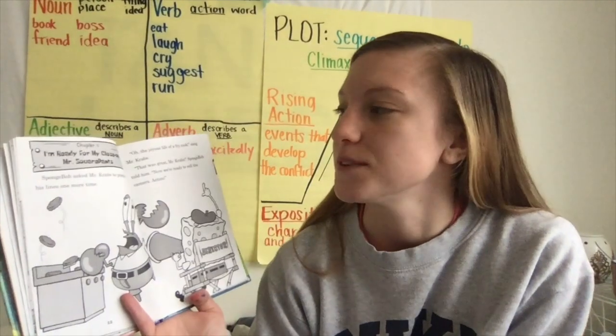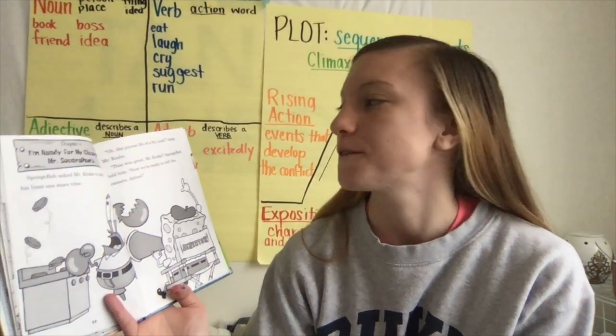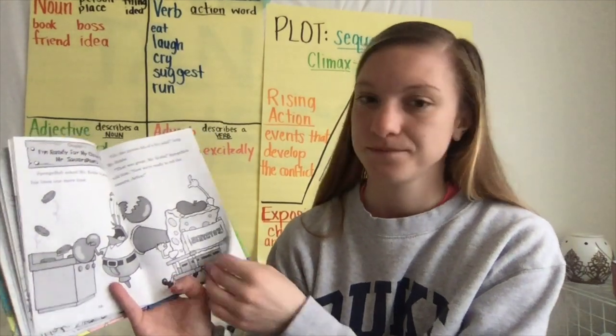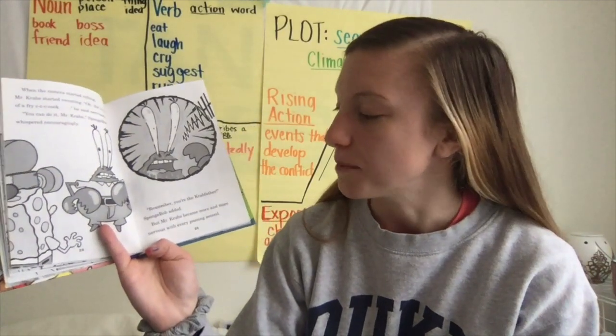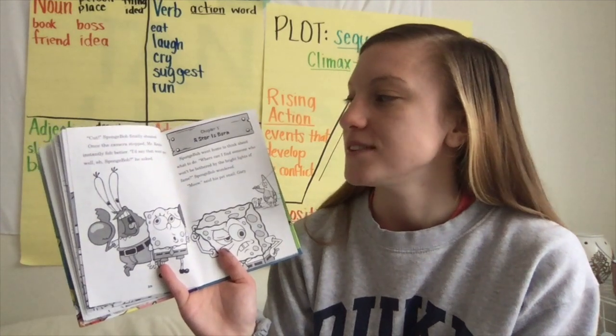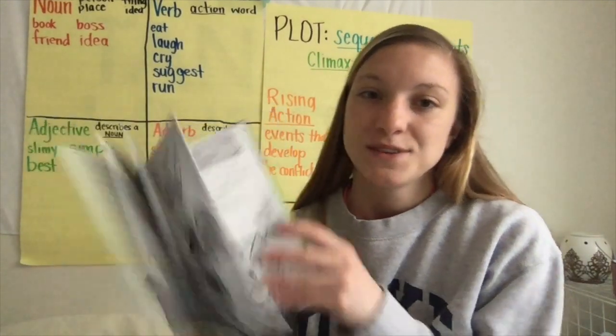Chapter four: I'm Ready for My Close-Up, Mr. Squarepants. SpongeBob asked Mr. Krabs to practice his lines one more time. 'Oh, the joyous life of a fry cook,' sang Mr. Krabs. 'That was great, Mr. Krabs,' SpongeBob told him. 'Now we're ready to roll the camera. Action.' When the camera started rolling, Mr. Krabs started sweating. 'Oh, the life of a fry cook,' he said nervously. 'You can do it, Mr. Krabs,' SpongeBob whispered encouragingly. 'Remember, you're the Crab Father,' SpongeBob added. But Mr. Krabs became more and more nervous with every passing second. 'Cut!' SpongeBob finally shouted. Once the camera stopped, Mr. Krabs instantly felt better. 'I'd say that went pretty well, eh, SpongeBob?' he asked.